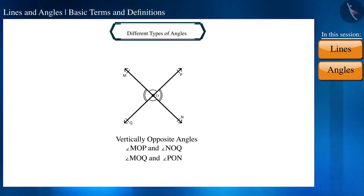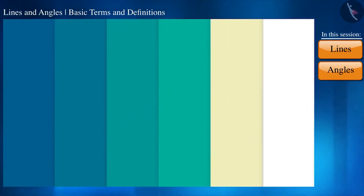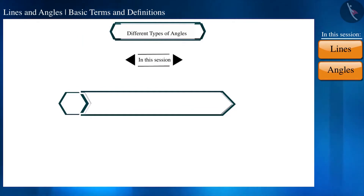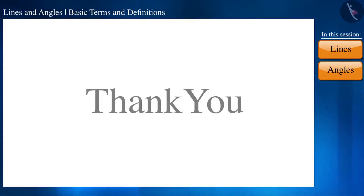The second pair of vertically opposite angles is angle MOQ and angle PON. That's all in this session — today we discussed some basic terms and definitions of lines and angles.